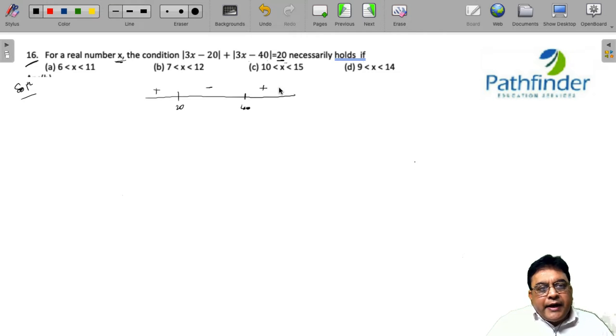Now, if 3x is greater than 40, then this number itself will become greater than 20. So, therefore, there will be no solution for this particular equation for any number greater than 40.